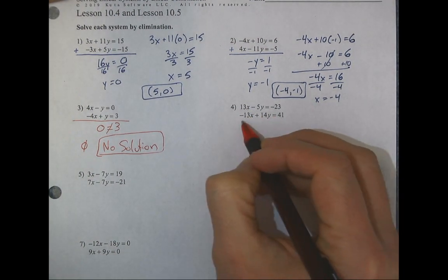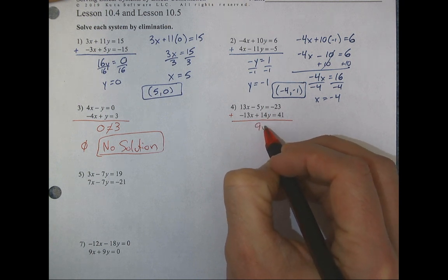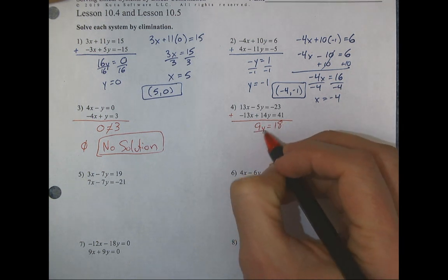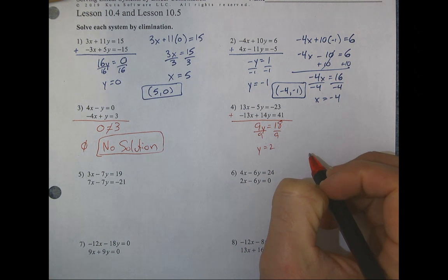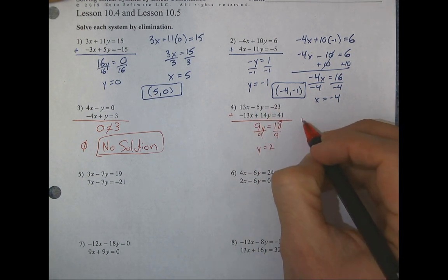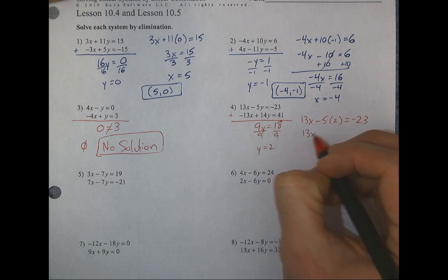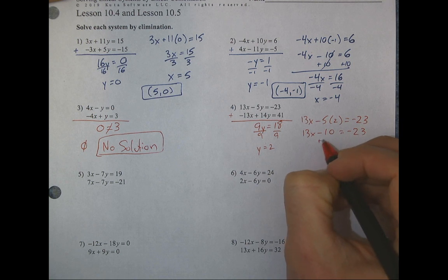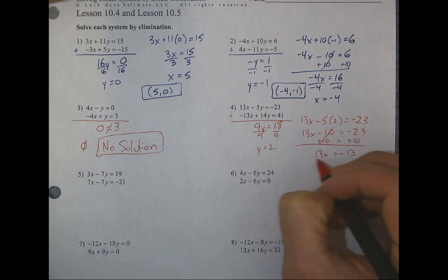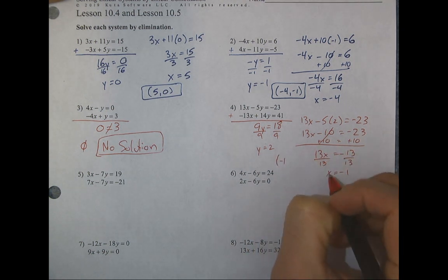Looking at number 4, I see my x's will cancel because I have 13 and negative 13. Adding straight down: negative 5 and 14 gives 9y, and negative 23 and 41 gives positive 18. Dividing: y equals 2. Going back to the first equation and plugging in y equals 2: 13x minus 5 times 2 gives 13x minus 10 equals negative 23. Adding 10 leaves 13x equals negative 13, dividing by 13 gives x equals negative 1. Final answer: (−1, 2).